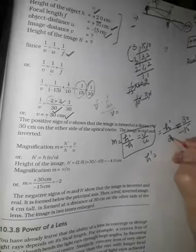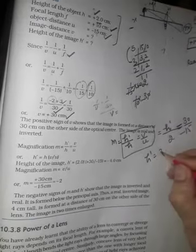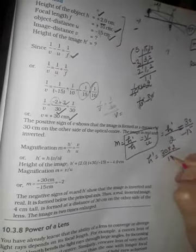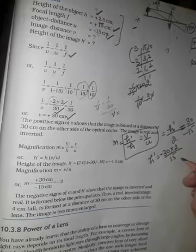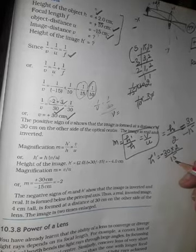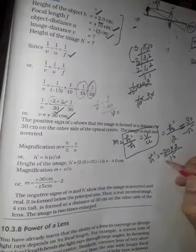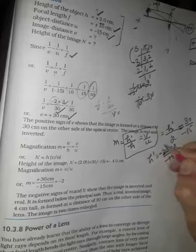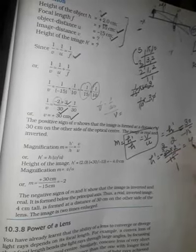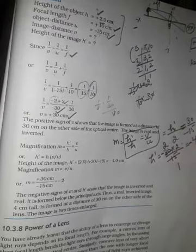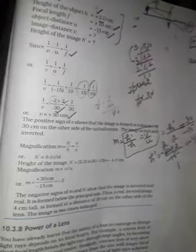We substitute the values: h equals 30 upon minus 15 times 2. This gives us minus 4 cm. The sign is minus, so we write minus 4 cm.